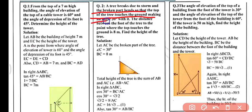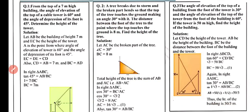Question 2: A tree breaks due to a storm and the broken part bends so that the top of the tree touches the ground making an angle of 30° with it. The distance between the foot of the tree and the point where the top touches the ground is 8 meters. Find the height of the tree. Let AC be the broken part; angle C = 30° and BC = 8 meters.